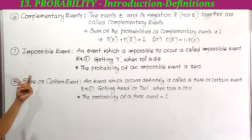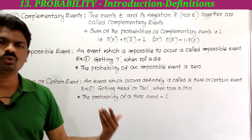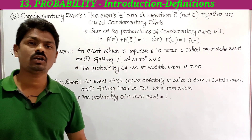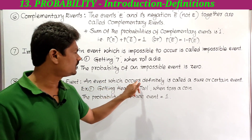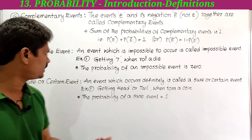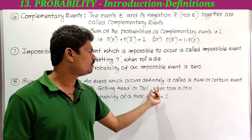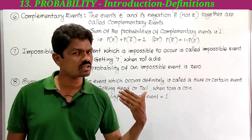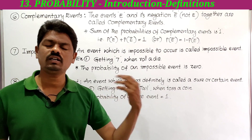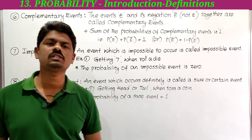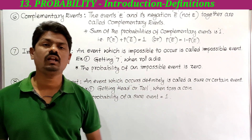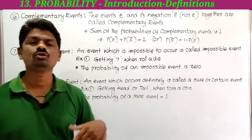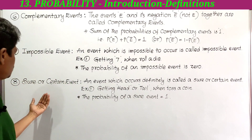Next, sure or certain event. An event that is certain to occur is called a sure or certain event. For example, when tossing a coin, getting either head or tail is certain — one of them must come. So this is a sure event. The probability of a sure event is equal to 1.